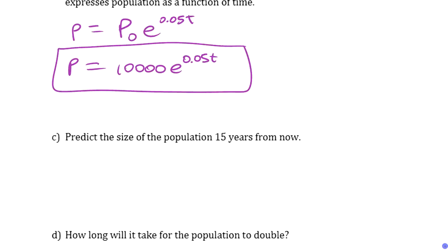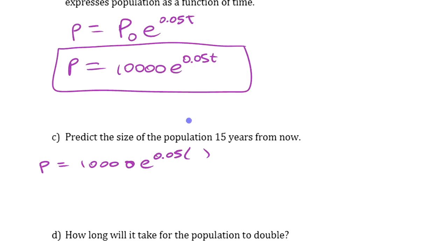If you wanted to predict the size of the population 15 years from now, we could just substitute our number in: e to the 0.05, and we'll sub in 15. Then just work it out on the calculator.